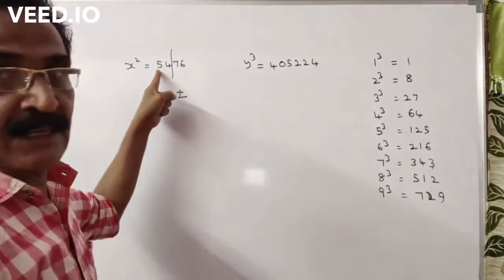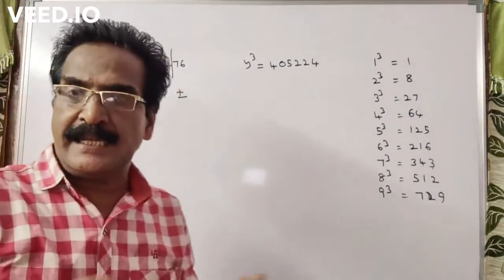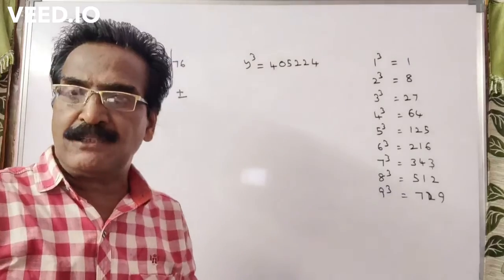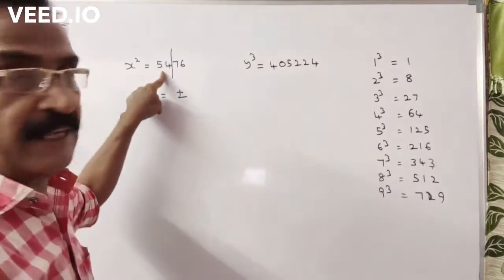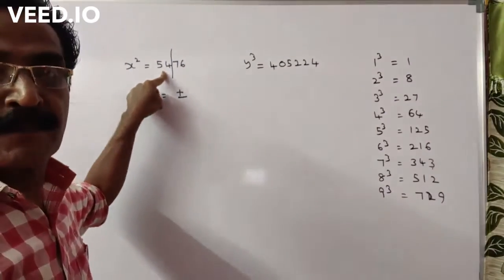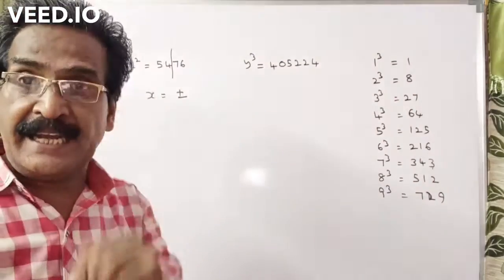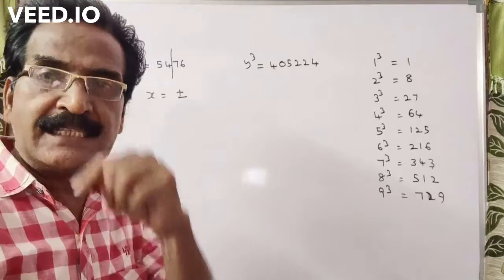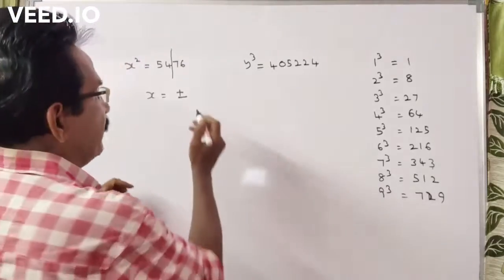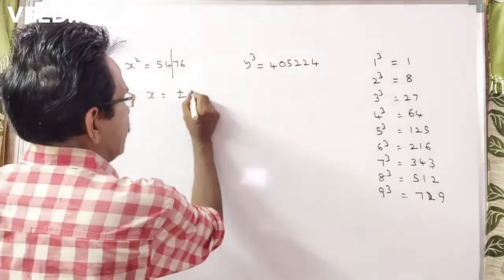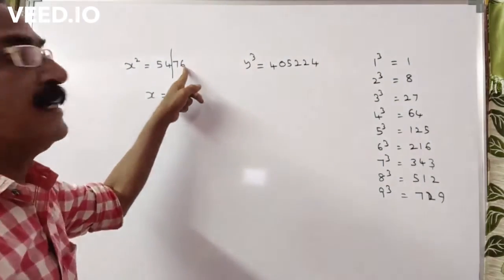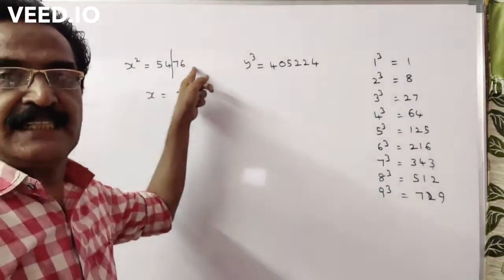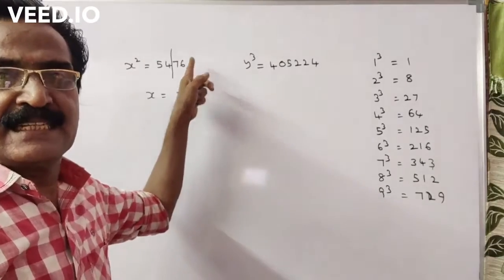Then, what is the perfect square just below 54? 49, that is the square of 7. So the first digit is 7.